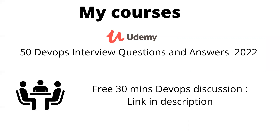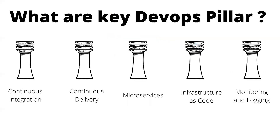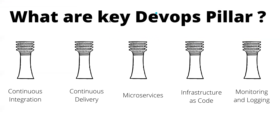So what are some key DevOps pillars? You can see them on my screen. The first one is continuous integration. What is continuous integration? Let's say developers are preparing some code and they make a pull request — we should make sure that this pull request is valid.